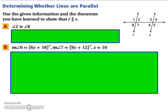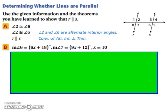Let's practice determining whether lines are parallel. Use the given information and theorems to show that R is parallel to S. If angle 2 and angle 6 are congruent, they're alternate interior angles. So using the converse of the alternate interior angles theorem, we know that R and S must be parallel.